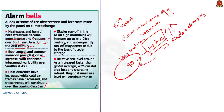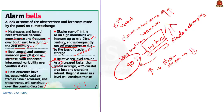The fourth observation: glacier runoff in Asian high mountains, that is Himalayas, will increase up to mid-21st century, and subsequently decrease due to loss of glacial storage. By mid-century, most glaciers would have melted, and after that, glacial runoff will continue to decrease. The fifth observation: relative sea level change will be more pronounced in Asia, particularly Southeast Asia, with coastal area loss and shoreline retreat amplified.